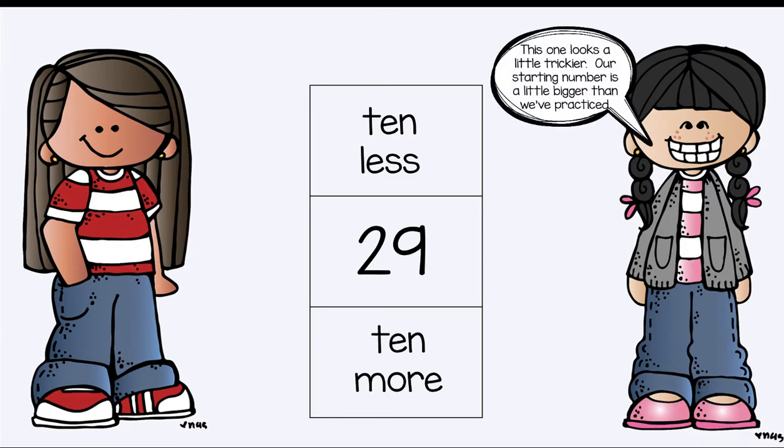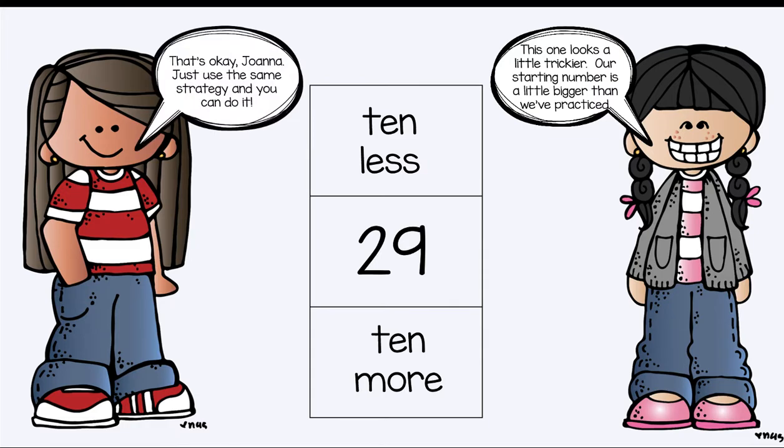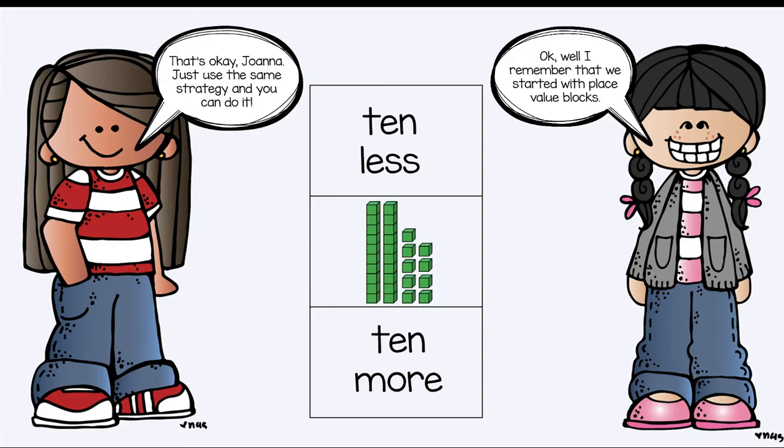This one looks a little trickier. Our starting number is a little bit bigger than what we practiced. That's okay, Joanna. We're just going to use the same strategy and we can do it. So again, we're practicing that strategy of finding 10 more and 10 less. Okay, well, I remember that we started with place value blocks. So let's draw our place value blocks. That's 2 tens and some cubes.